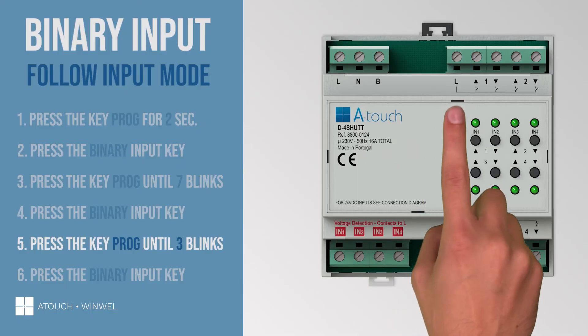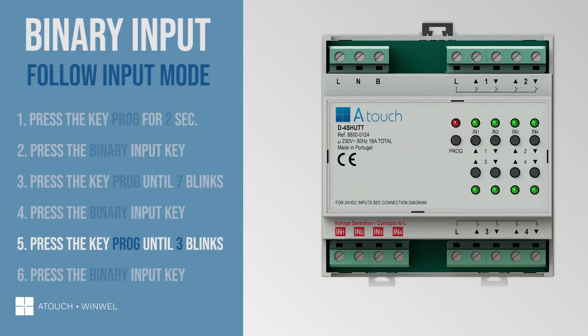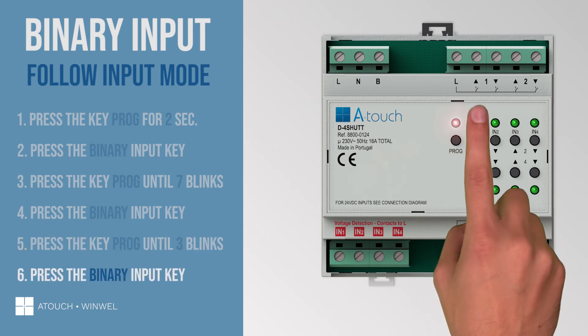Press the key prog repeatedly until the LED blinks three times — the number of blinks for option 3. After that, press the binary input key to finish.